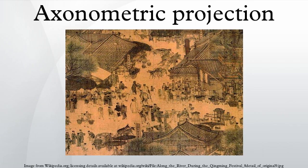In dimetric projection, the direction of viewing is such that two of the three axes of space appear equally foreshortened, of which the attendant scale and angles of presentation are determined according to the angle of viewing. The scale of the third direction is determined separately. In trimetric projection, the direction of viewing is such that all three axes of space appear unequally foreshortened. The scale along each of the three axes and the angles among them are determined separately as dictated by the angle of viewing.